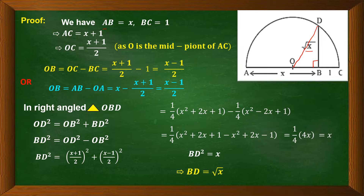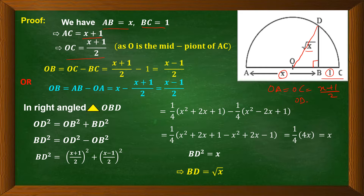AB equals x by construction, and BC equals 1 centimeter. Total AC equals x plus 1. Since O is the midpoint of AC, OC equals OA equals (x+1)/2. Now, OD is also a radius of the semicircle — OA, OC, and OD are all radii — so OD equals (x+1)/2.